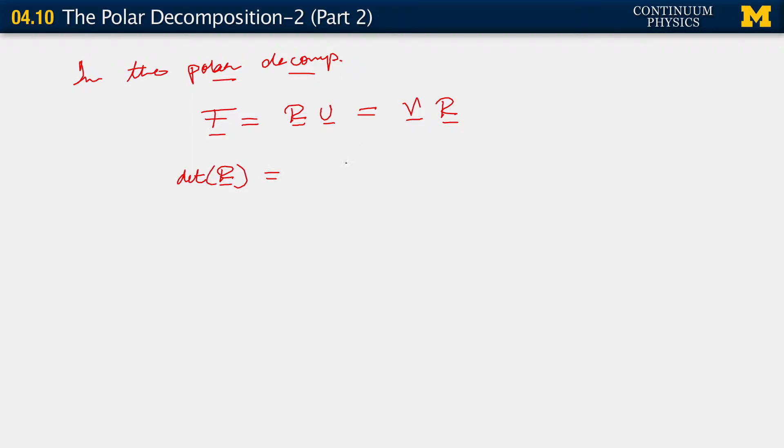It's easy enough to do here. The determinant of r is simply the determinant of f u inverse, which is determinant of f, determinant of u inverse.